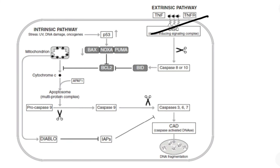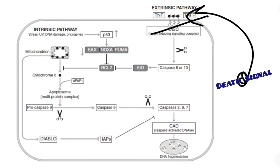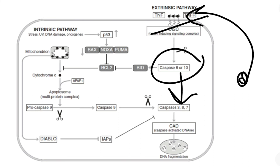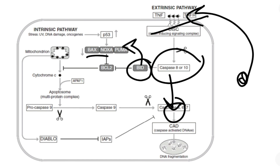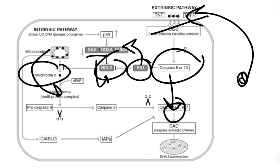The second pathway is the extrinsic pathway. This happens when a signal comes and attaches to the receptor of the cell. Once this happens, caspase 8 is activated. Caspase 8 has two ways to perform apoptosis: the first is to directly activate caspase 3, which again activates nuclease by inhibiting the inhibitory protein. The second is the activation of BID. Once BID is activated, it activates Bax, and again Bax inhibits BCL2, cytochrome C moves from the mitochondria into the cytoplasm, and the same pathway continues.